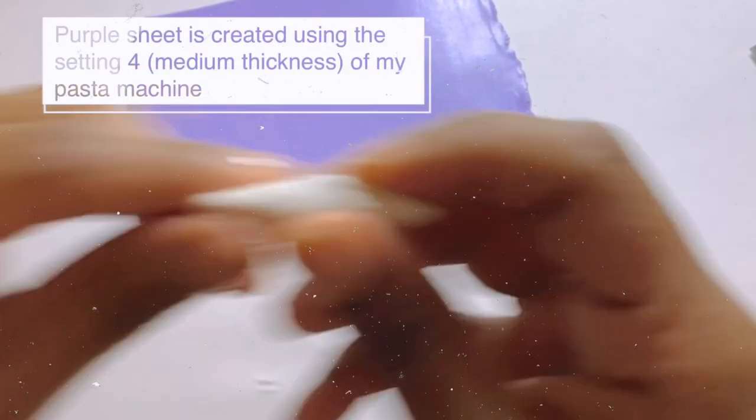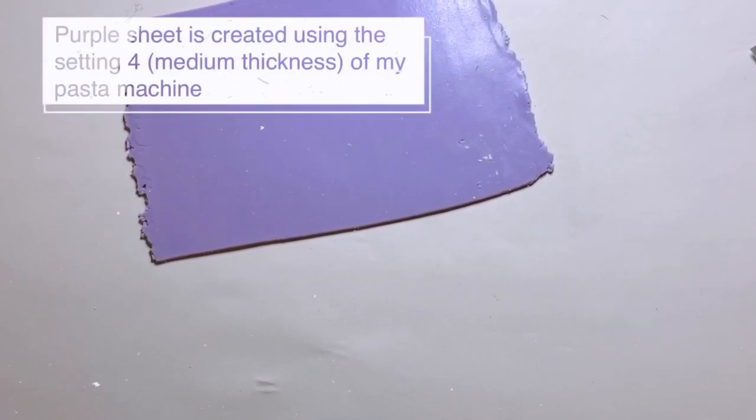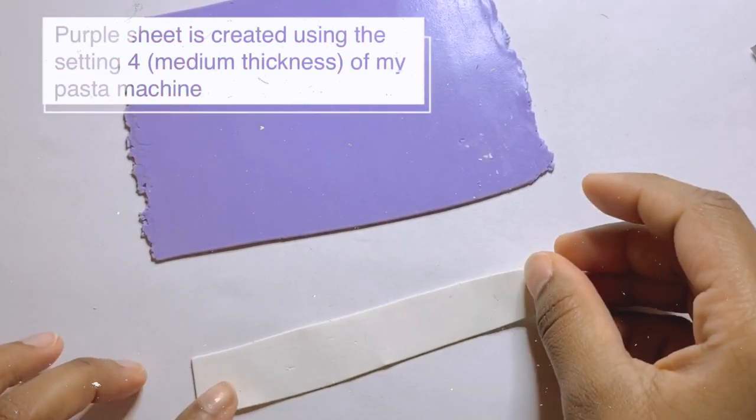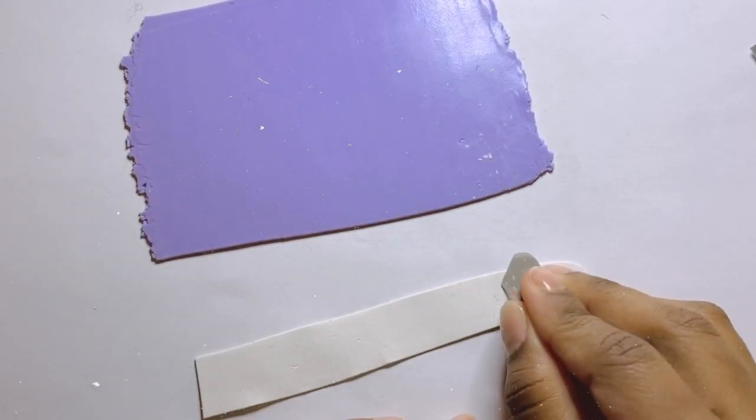To begin creating the petals, I ran my white clay through the pasta machine in the thinnest setting. Using the cutter I made, I started cutting the petals out.